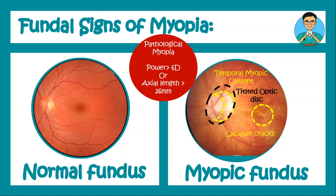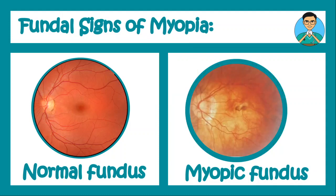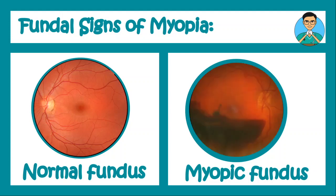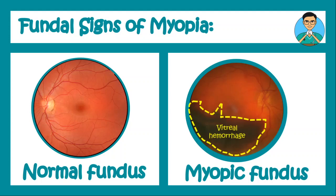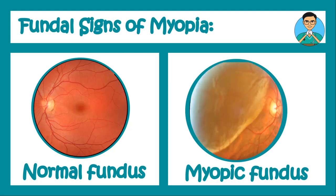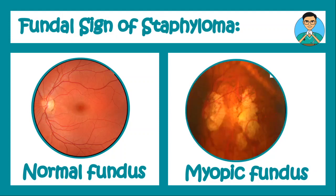Apart from that, a tilted optic disc can also be seen. In a myopic fundus you can also see Förster-Fuchs spots, which are due to sub-retinal hemorrhage at the fundus. Apart from that, you can get vitreous hemorrhage or a rhegmatogenous retinal detachment — as the eyeball keeps growing and becomes very large, the retina tears off and gets detached.